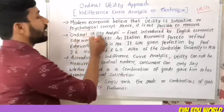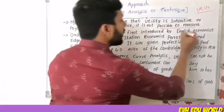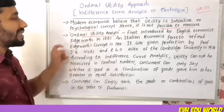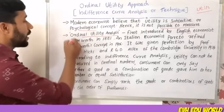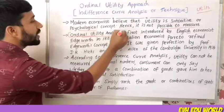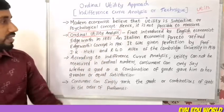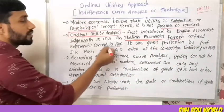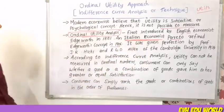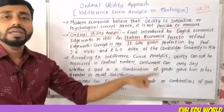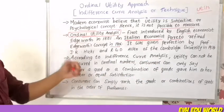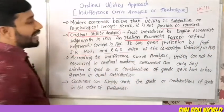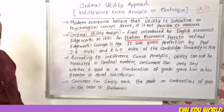Ordinal Utility Analysis was first introduced by English economist Edgeworth in 1881. Later, Italian economist Pareto refined Edgeworth's concept in 1906. It was then given perfection by Professor J.R. Hicks and R.G.D. Allen of Cambridge University in 1934.